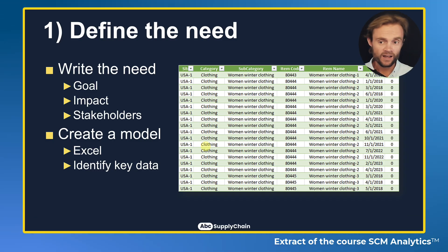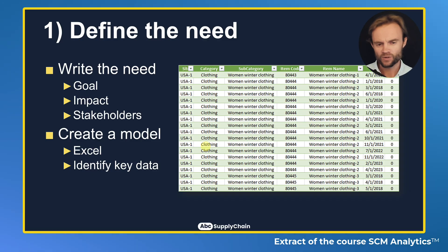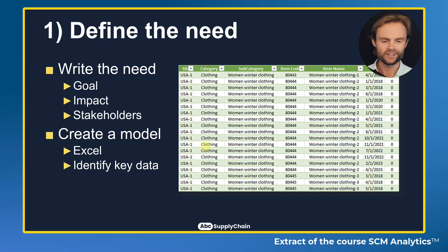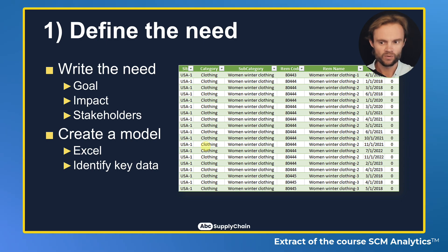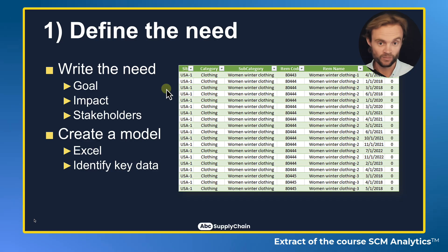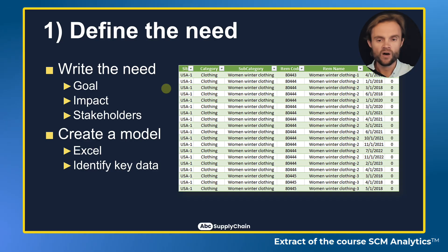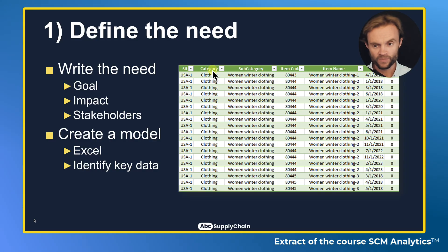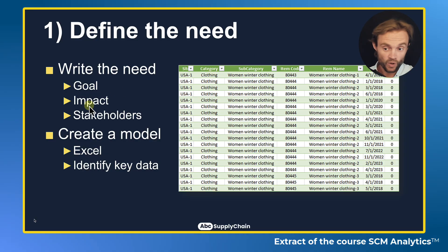The first step is to be very clear about exactly what you need, because most of the time people say 'I need this' without being precise. I really recommend you create an Excel spreadsheet with an example — this is exactly what I want — with the column names exactly as they appear in the IT system. Define what you need, what is the goal, where is the impact, who is responsible, and identify the key data.